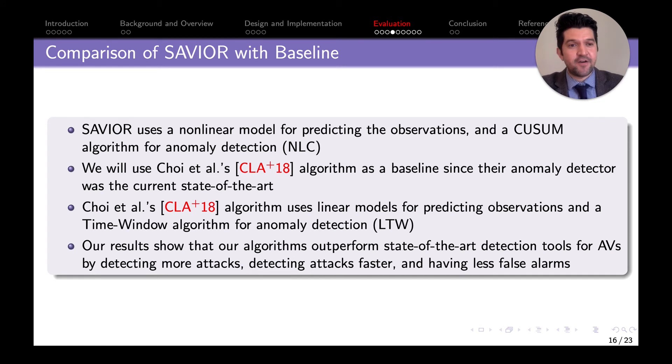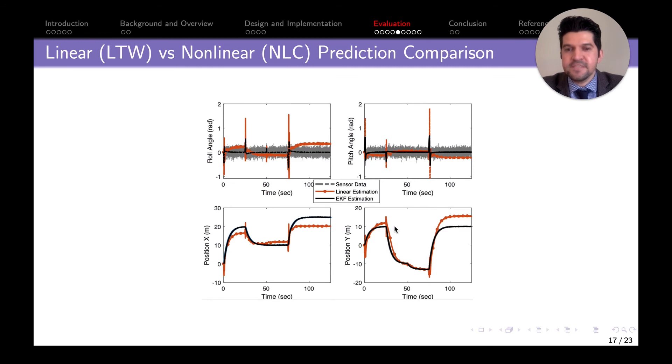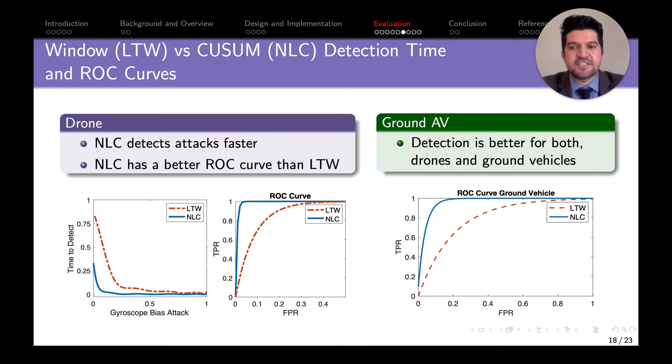We need a baseline to compare our method to ensure we're improving the state of the art. We compared with Choi's algorithm as baseline. Because our model uses nonlinear models, we call ourselves NLC. Because Choi uses linear models on time windows, we call their approach LTW. As we can see, this shows how sensor measurements compare against both—the black is the nonlinear and the yellow is the linear. The black is able to follow the process a little bit better. For ROC and detection time, our methods detect attacks faster with less false positive rate and detect most attacks. The same happens on the ground vehicle where the orange line is the baseline and our implementation is the blue line.